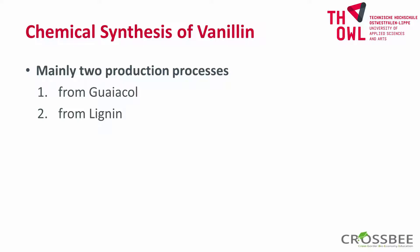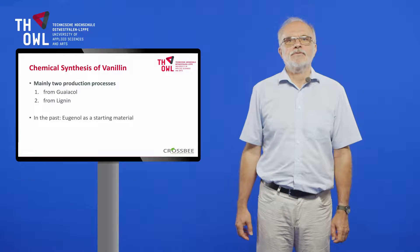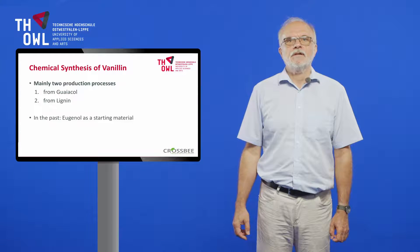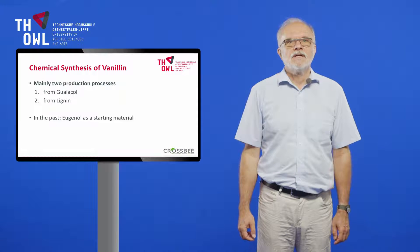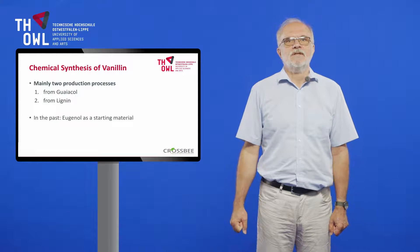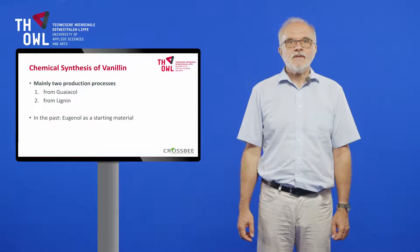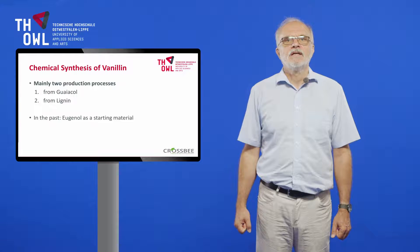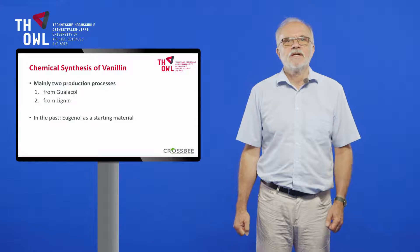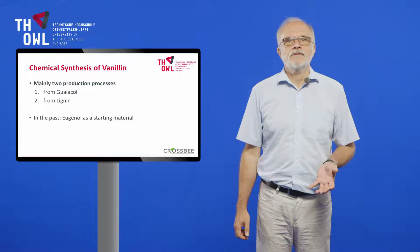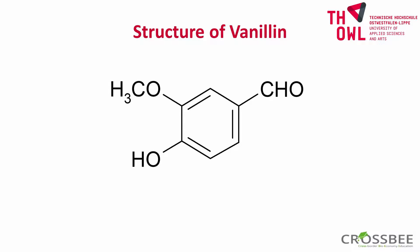Now we will come back to the production processes. There are mainly two chemical production processes. The largest process starts with guaiacol, a fossil oil-based chemical, while the second one uses lignin, a waste product of paper pulping. In the past, eugenol was also used as a starting material. All these processes will not result in a natural flavour. As the demand for natural vanillin is high and vanilla pods are not a sufficient source despite an exorbitant price, there are still a lot of efforts for biotechnological processes to obtain natural vanillin.